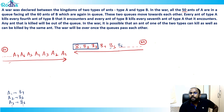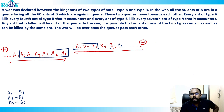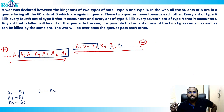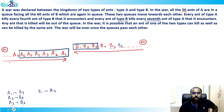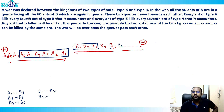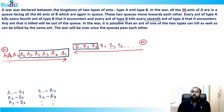Similarly, every ant of type B kills every seventh ant of type A. For b1, a1 through a6 will pass, so b1 kills a7. For b2, a1 through a6 pass and a7 is killed by b1, so b2 kills a8. This means a1 to a6 will never be killed in the war.